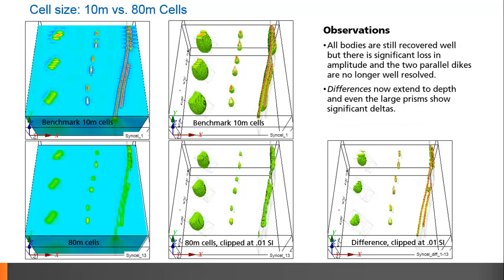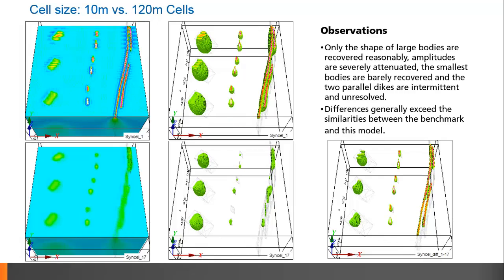At 80 meter cells, the bodies are still recovered, but the depth extent is less well resolved. Amplitude has decreased, and the two dikes are no longer distinctly modeled. At 120 meter cells, only the shape of the large bodies are recovered, but amplitudes are severely attenuated, and the smaller bodies at depth are barely resolved. The two parallel dikes are not resolved, and the difference between the two exceeds the similarities.